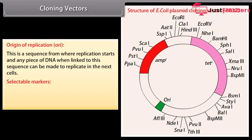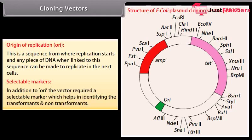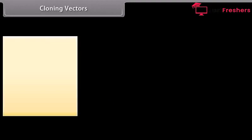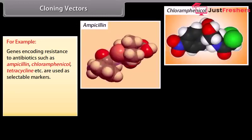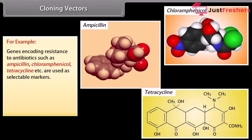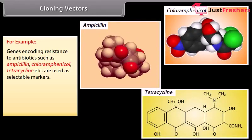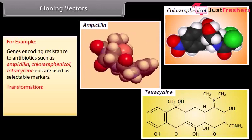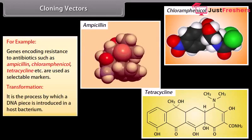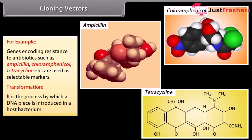Selectable markers. In addition to the origin of replication, the vector requires a selectable marker which helps in identifying the transformants and non-transformants. For example, genes encoding resistance to antibiotics such as ampicillin, chloramphenicol, tetracycline, etc. are used as selectable markers. Transformation is a process by which a DNA piece is introduced into a host bacterium.